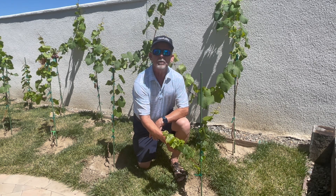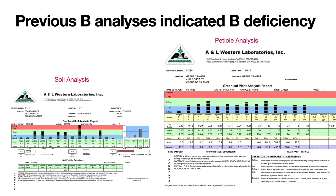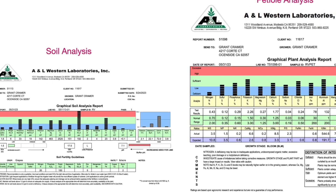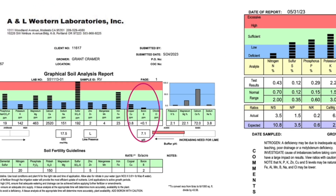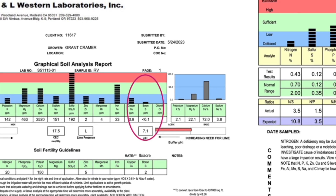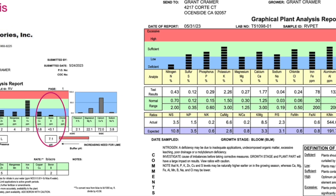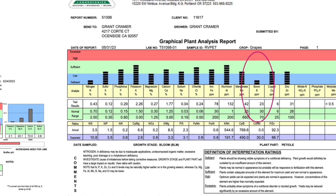That's what we'll be discussing today. My Backyard Vineyard, Season 2, Episode 7: Boron Deficiency. As you may recall, in my previous analyses, I discovered that I had low boron in my soil. You can see the graph here where our boron was extremely low. And upon further testing for the petiole analysis, you can see that the boron was also low in the petioles, indicating that the plants were suffering from boron deficiency.